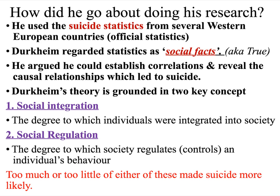Following his research, Durkheim argued that there were two factors that could explain the different levels of suicide across countries. One was the level of social integration — the degree to which individuals were integrated into society, their sense of belonging. The other was social regulation — the degree to which societies regulate or control an individual's behaviour. If you had too little or too much of either of these, he argued this made suicide more likely.